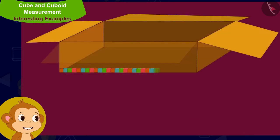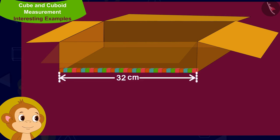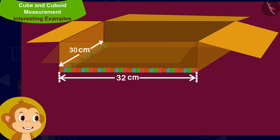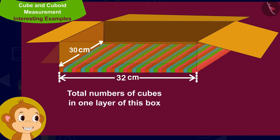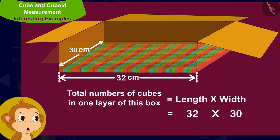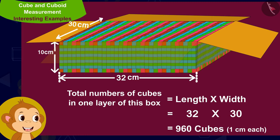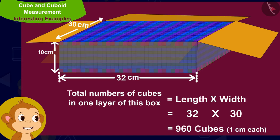The length of the cuboid shaped box is 32 centimeters, or 32 cubes of dimension 1 centimeter each. Its width is 30 centimeters, or 30 cubes of dimension 1 centimeter each. This means that in one layer of this box, there are 32 times 30 — that is 960 cubes of dimension 1 centimeter each. The height of this box is 10 centimeters, meaning there will be 10 such layers.